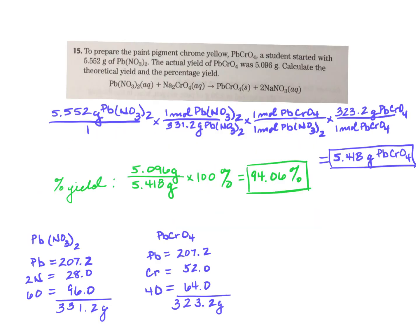Here's number 15. It's a similar type problem only now we're dealing with lead chromate. And there's a student that's going to prepare the paint pigment chrome yellow, which is lead chromate. They started with 5.52 grams of lead nitrate. So what I noticed first of all is they're giving you four sig figs. So my answer is going to be carried out to four sig figs. And we can talk about sig figs the next time we meet.